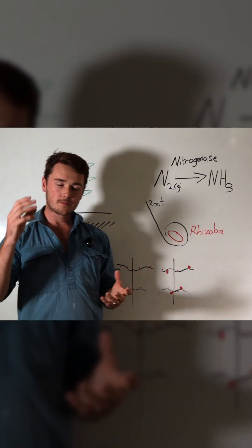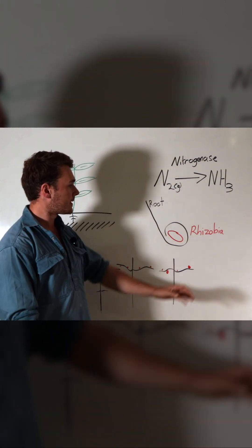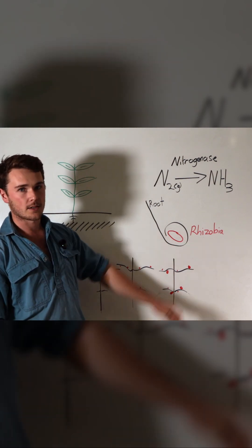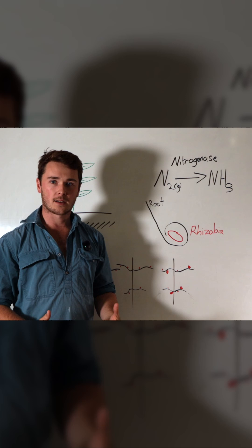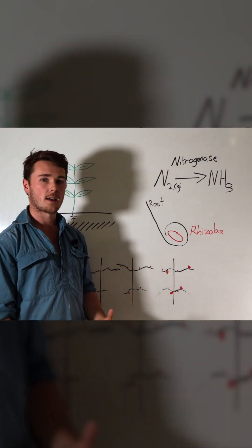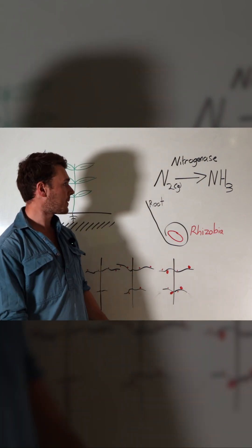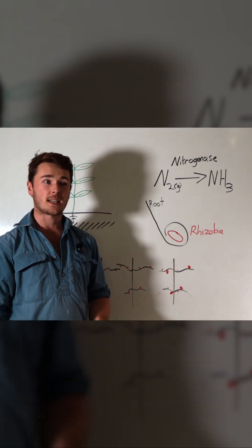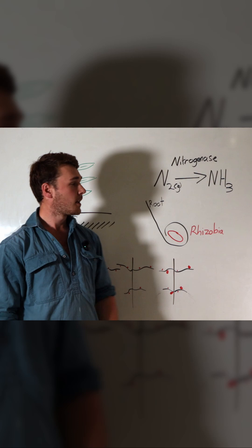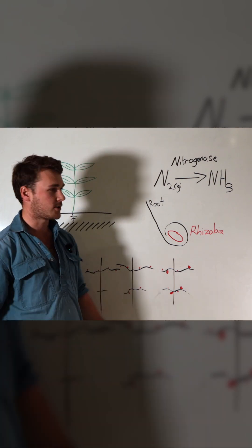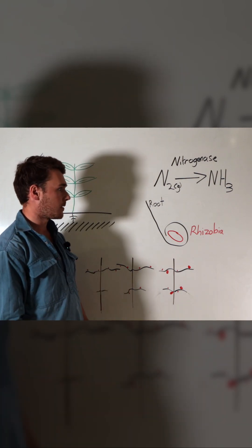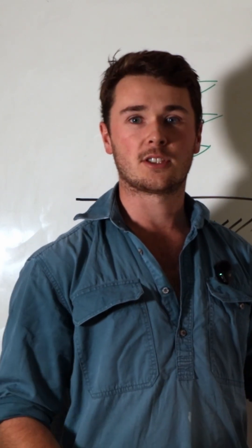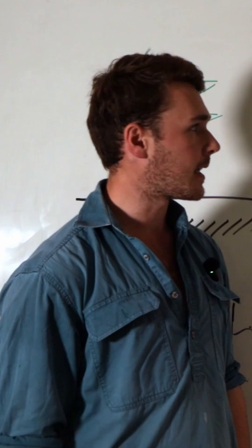So we have the legume root - it puts in a root and it finds these bacteria called rhizobia bacteria. Now these bacteria are quite special because they can fix nitrogen out of the atmosphere. It takes nitrogen out of the atmosphere, and the atmosphere has about 78% nitrogen gas. So there's heaps of nitrogen in the atmosphere - it works out to be around 74,000 tonnes of straight nitrogen above each hectare of land.